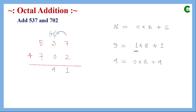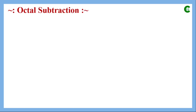Next, five plus seven equals twelve. Twelve represented in octal gives sum digit four and carry one. Since this is the most significant digit, we write the final carry here. The final result of this octal addition is 1441.